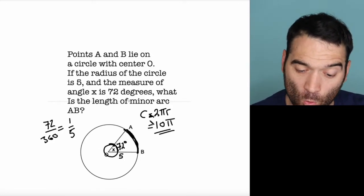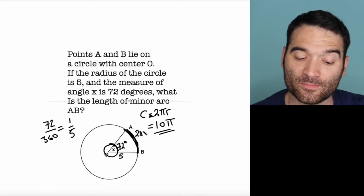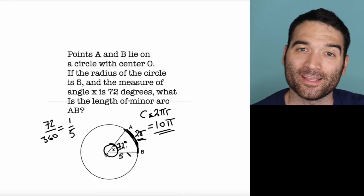If the whole pizza, the whole crust all the way around is 10 pi, then 1 fifth of that is 2 pi. 2 pi is the correct answer.